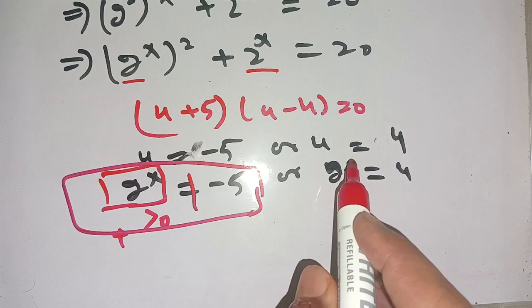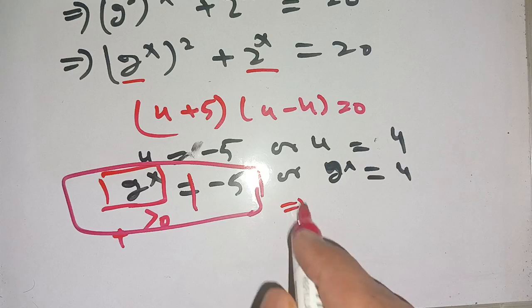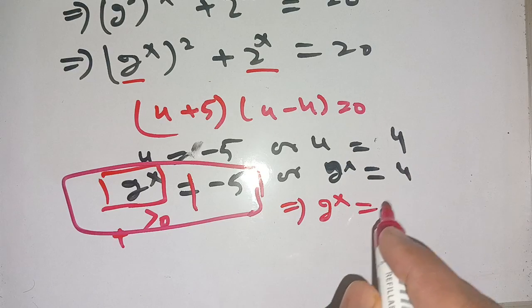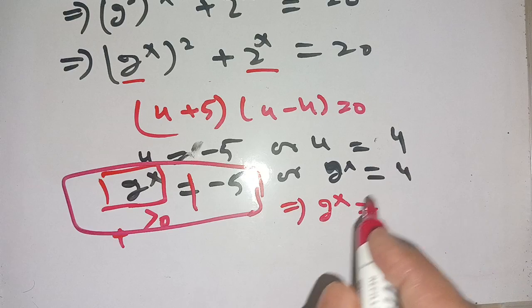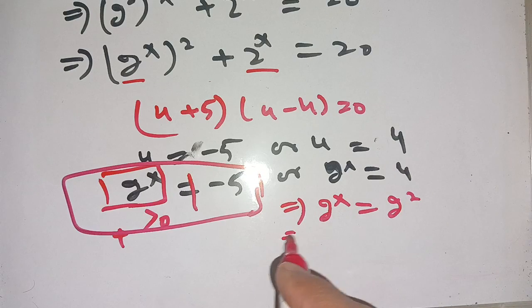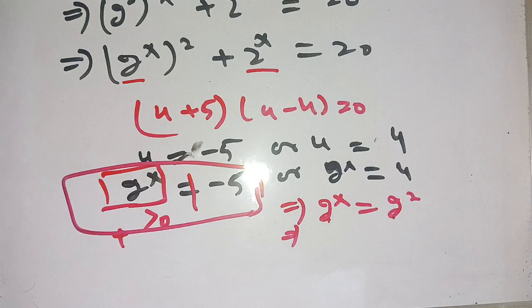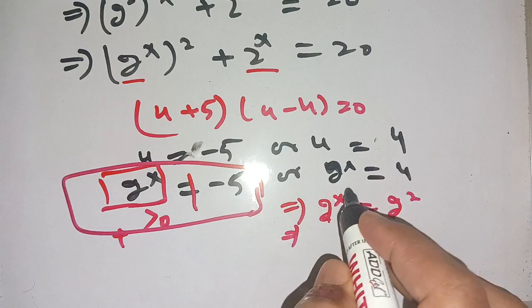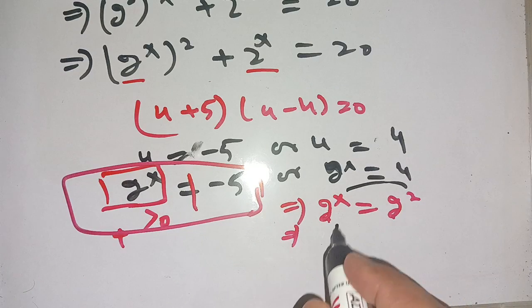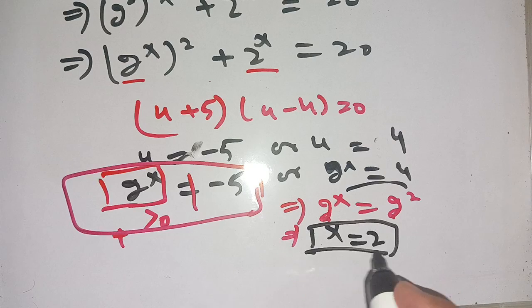The only possible solution is 2^x = 4. We write this as 2^x = 2². Since the bases are the same, we can compare the exponents, which gives x = 2.